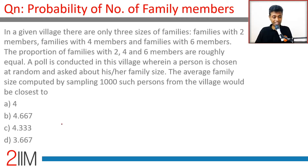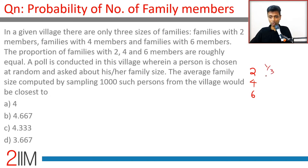In a given village, there are only three sizes of families: families with two members, four members, and six members. The proportion of families with two, four, and six members are roughly equal — so one third, one third, one third. A poll is conducted in this village wherein a person is chosen at random and asked about his or her family size. The average family size computed by sampling a thousand such persons from the village would be closest to?